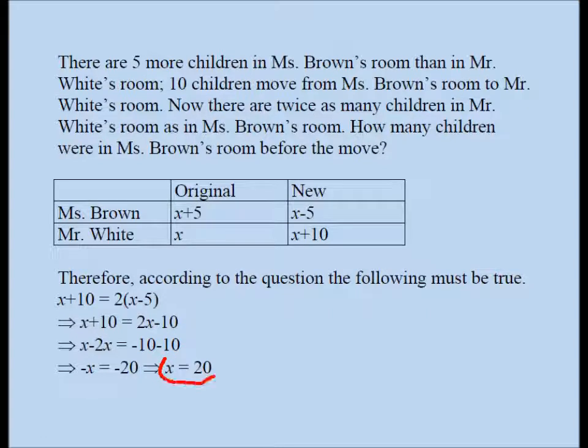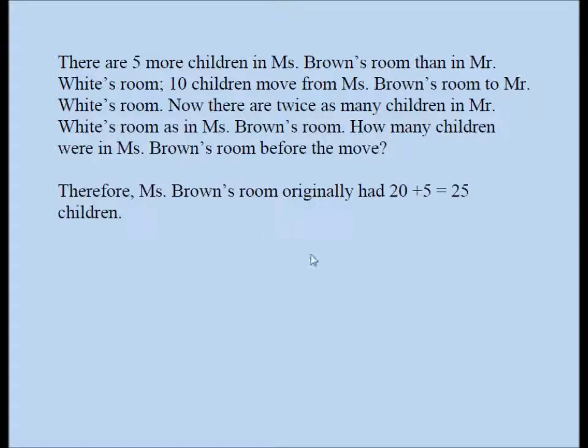But we are not quite done. The question asks, how many children were in Ms. Brown's room before the move? So this is what the question wants. The question wants us to find this. So we have to plug in 20 here and the answer should be 25. So if X is 20, you plug in X on the table in the right place. Original number of students in Ms. Brown's classroom, that turns out to be 25. So that's your answer, 25.